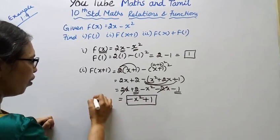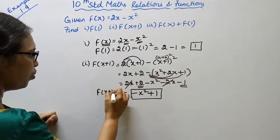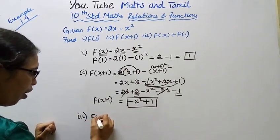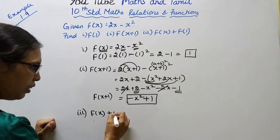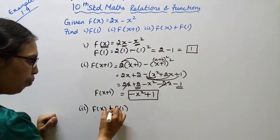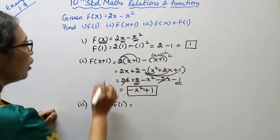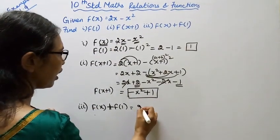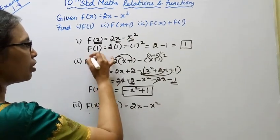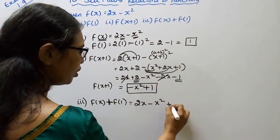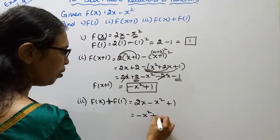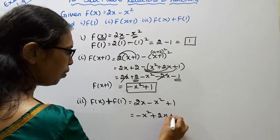So f of x plus 1 equals negative x squared plus 1. Now the third subdivision: f of x plus f of 1. Calculate each separately. f of x is already known as 2x minus x square, and f of 1 was found to be plus 1. Therefore the answer is 2x minus x square plus 1, which equals negative x square plus 2x plus 1.